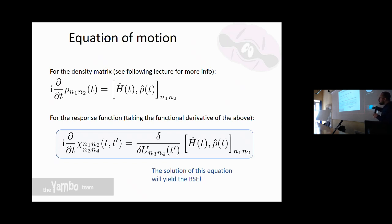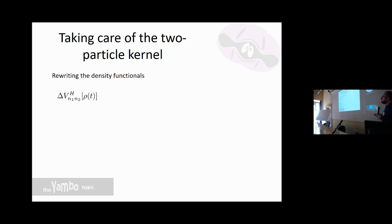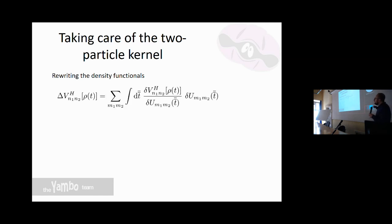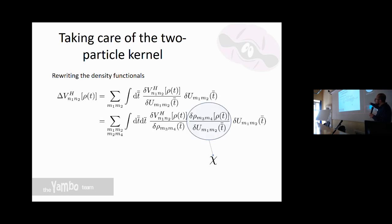When we take this functional derivative, we need to evaluate the derivative of the commutator of the full interacting Hamiltonian and the time-dependent density matrix. Let's look at an example for the Hartree potential. The Hartree potential can be written in this functional form, and then we apply the chain rule, splitting into a functional derivative with respect to the density and the definition of our response function.